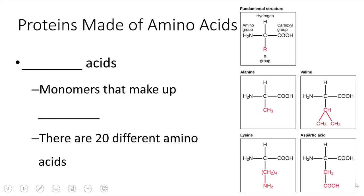With our next group, the proteins, their monomers or building blocks are the amino acids. These are the monomers that make up proteins. And it turns out that there are 20 different amino acids that are naturally occurring in the proteins of living organisms.